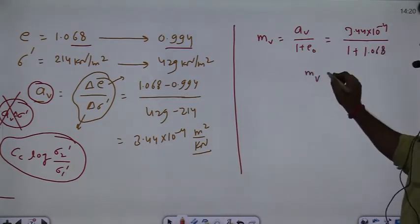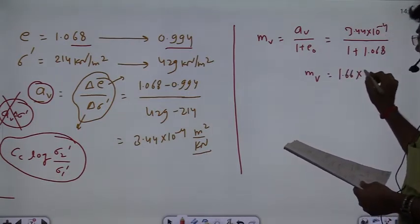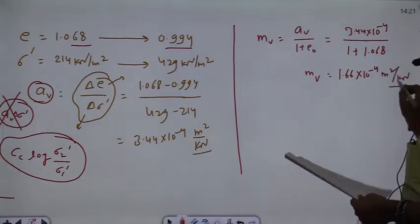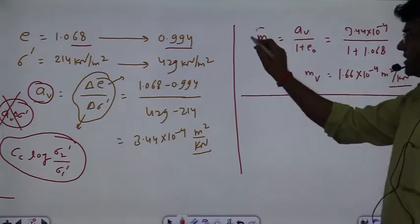If you have to solve MV here, the result will be 1.66 into 10 raised to the power minus 4 meter square per kilonewton. This is MV. I didn't ask the question, I just want to tell you how to solve the coefficient.